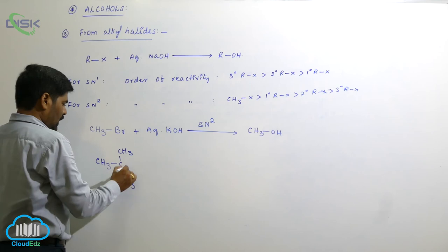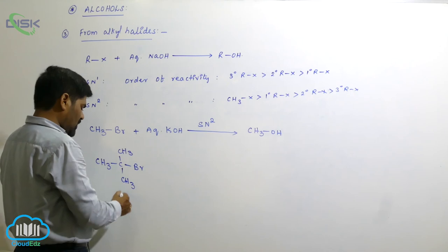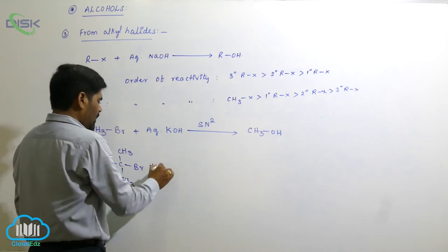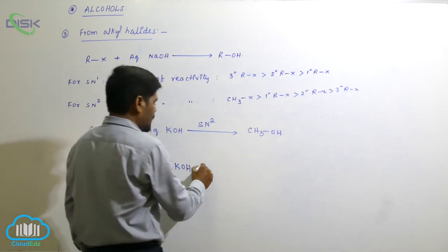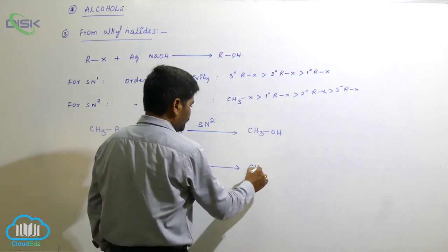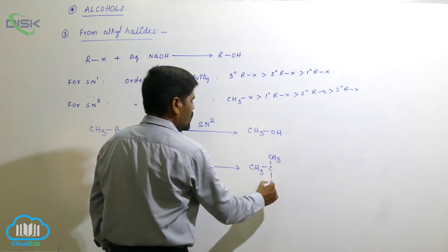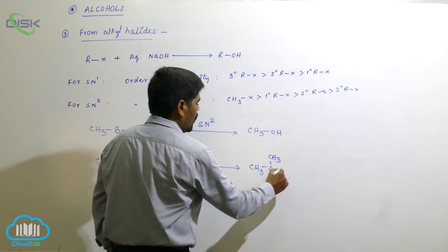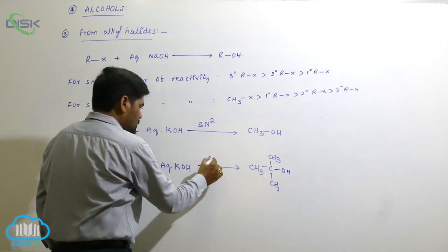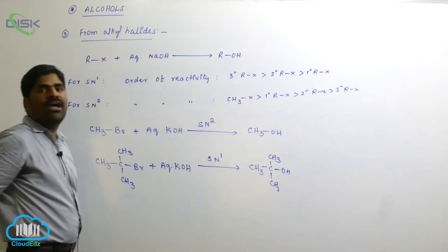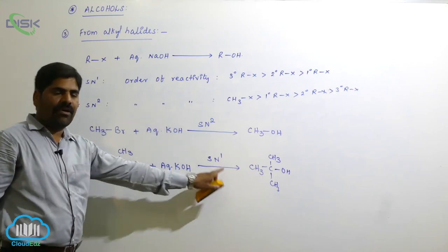If we take tertiary butyl bromide and react it with aqueous potassium hydroxide, it forms a tertiary alcohol (with an -OH group). The formation of this alcohol proceeds through the SN1 mechanism.